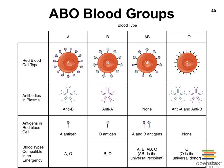Here we're looking at a table that focuses on just the ABO blood group. Notice that near the top are the blood types: A, B, AB, or O. What dictates whether you are blood type A, B, AB, or O, as I mentioned earlier, is whether or not one of those antigens is present or not.